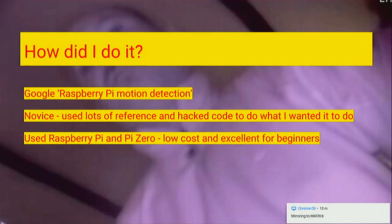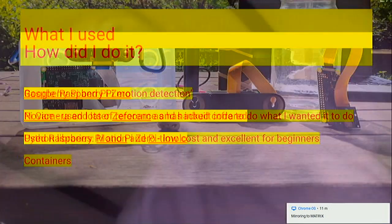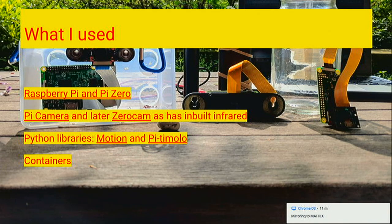How did I do it? I just Googled 'Raspberry Pi motion detection'. As I said, there are loads of tutorials and resources in the community. I'm a novice so I used lots of reference material and had to hack the code a little bit. I used the Raspberry Pi and the Pi Zero as it's low cost and great for beginners.